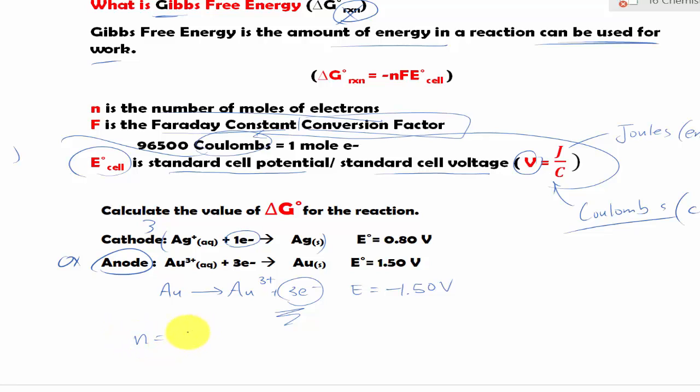So therefore n is equal to 3. F is the Faraday constant, so it's given to us. And E_cell, we can solve for E_cell.